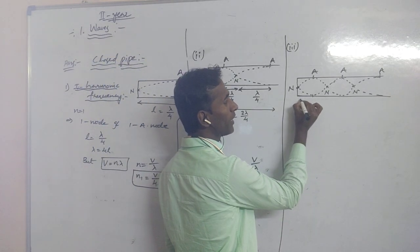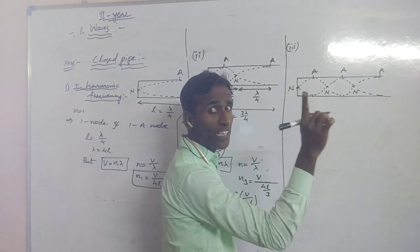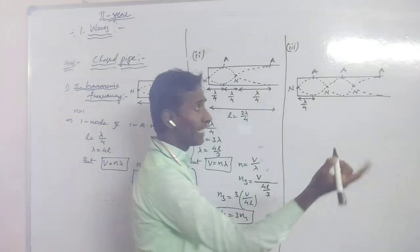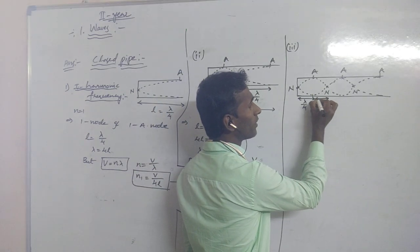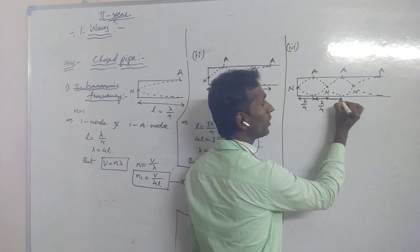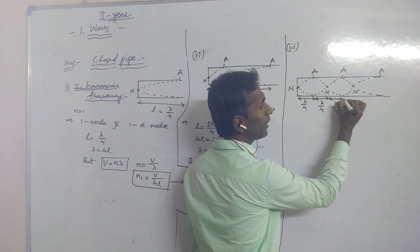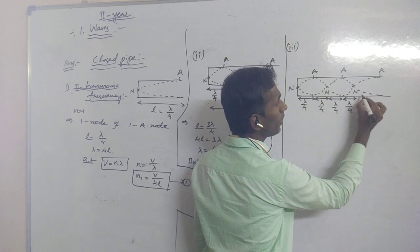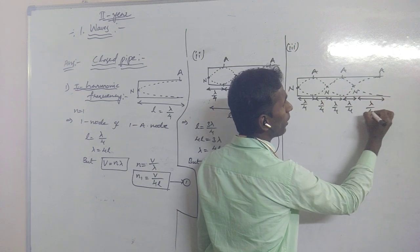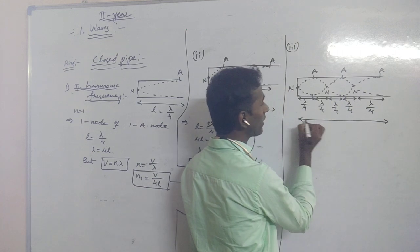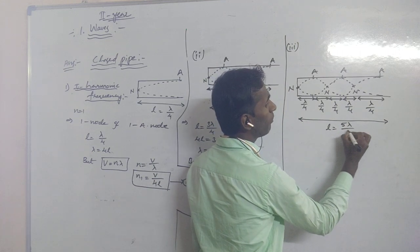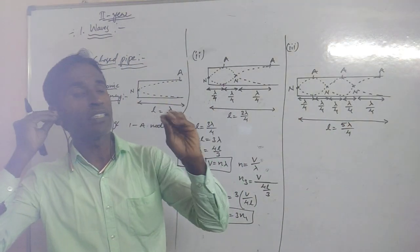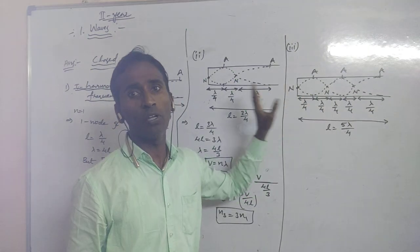The distance between each consecutive node and anti-node is lambda by 4. There are 5 such distances total, so L equals 5·lambda by 4. That is why it is the fifth harmonic frequency, consisting of 3 nodes and 3 anti-nodes.